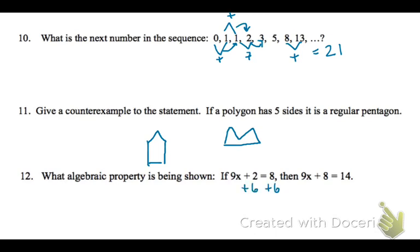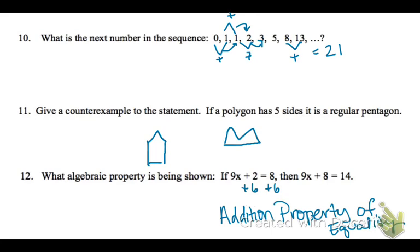On number 12, if you add 6 to both sides, you get the new statement, and that's the addition property of equality. If you add the same thing to both sides of an equation, it's still equal.